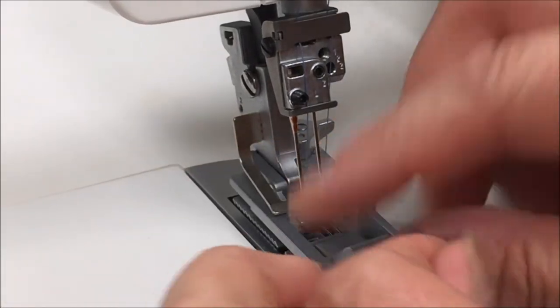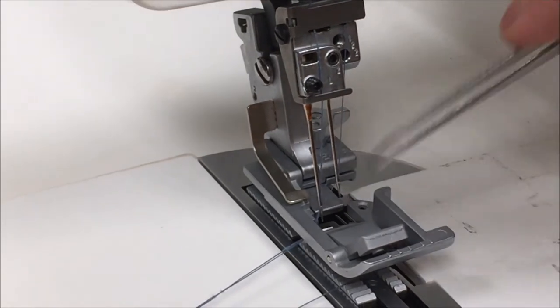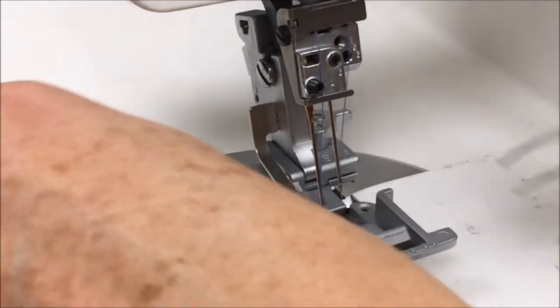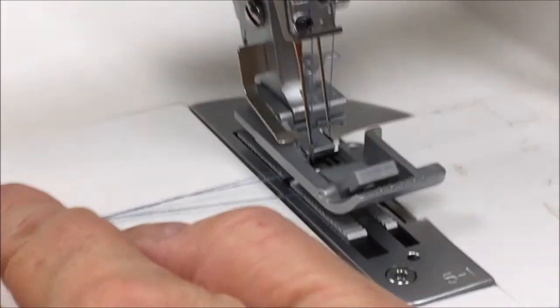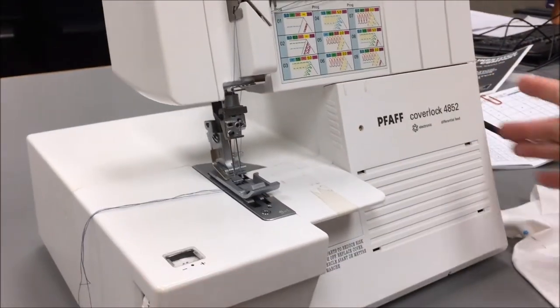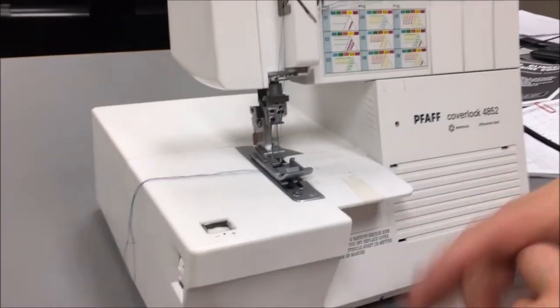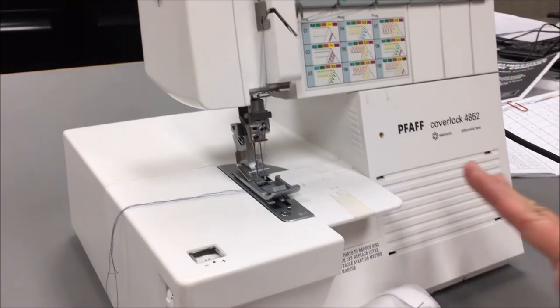Now we're going to put all three threads, free from each other, under the presser foot towards the left. Then we can lower the presser foot. It is always important that you do a test stitch. Get some scrap fabric, do a little hem fold, and test it out.